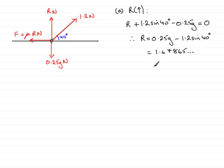And if we round this to two significant figures, then we find that we get 1.7 newtons to two significant figures. So that is the normal contact force r. And that brings us to the end of part (a).